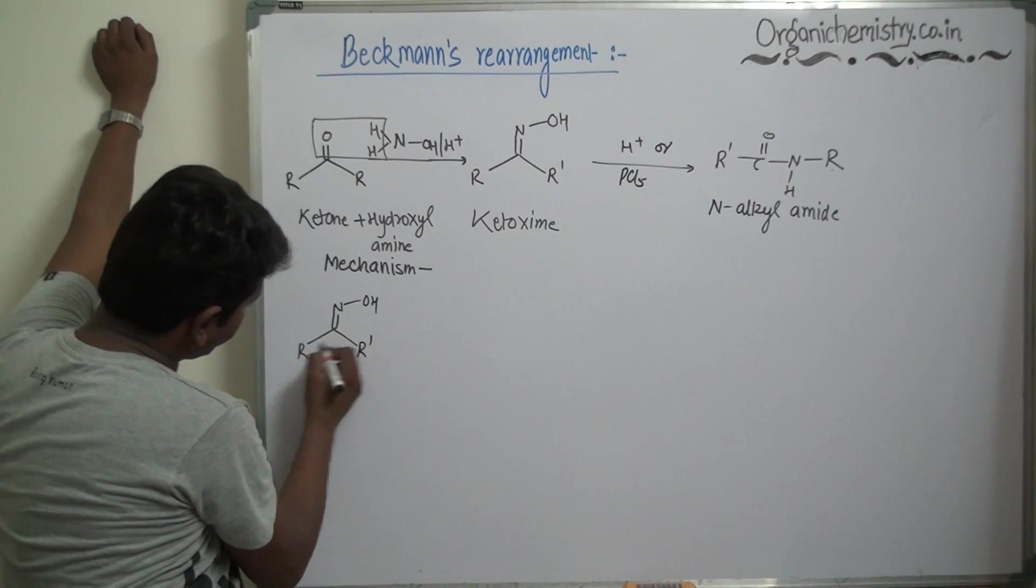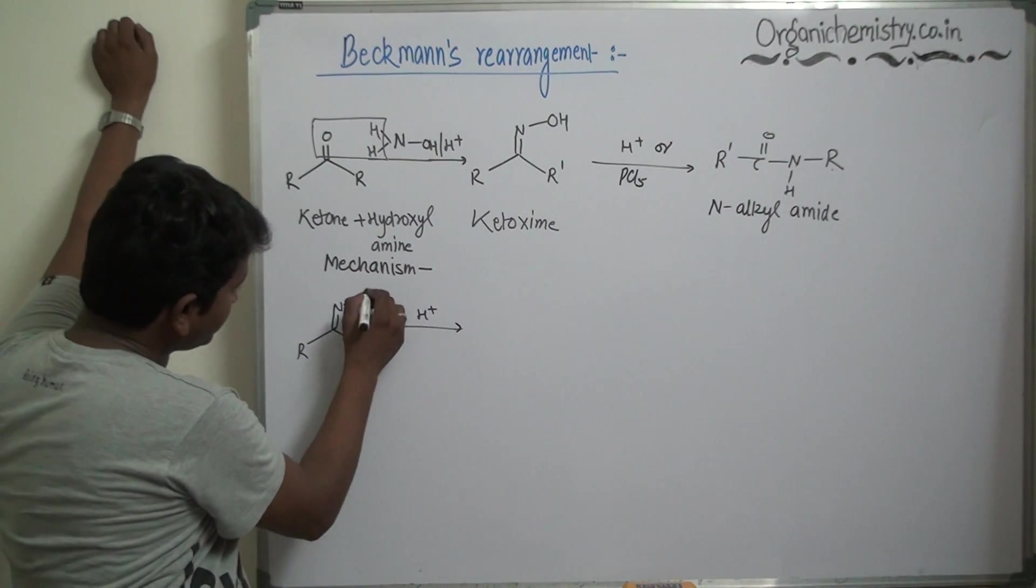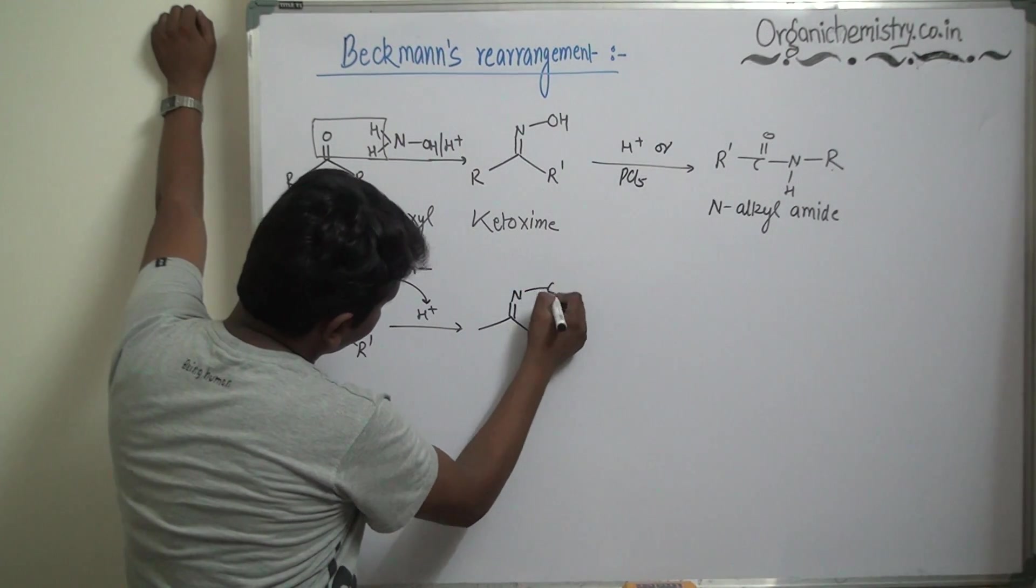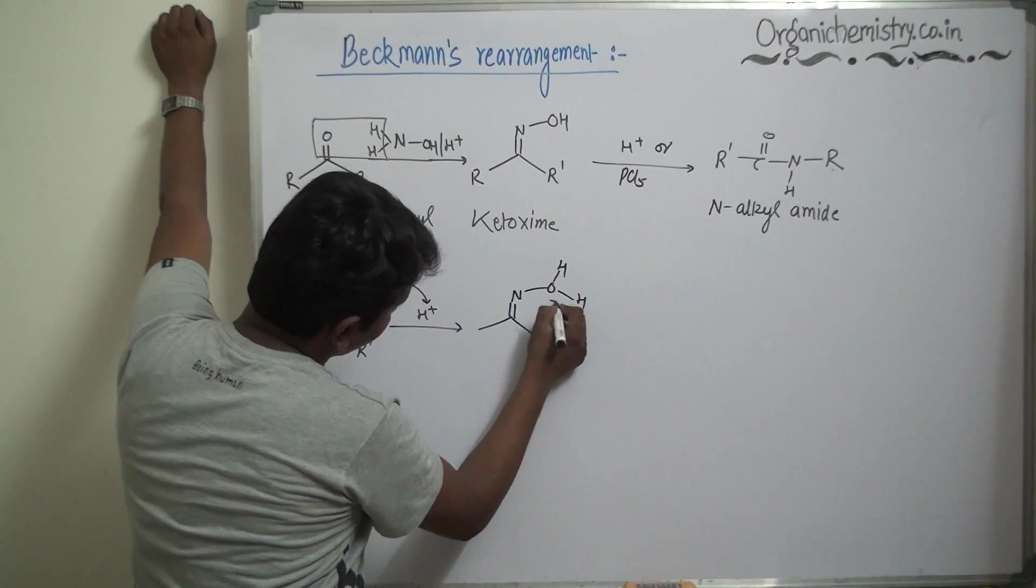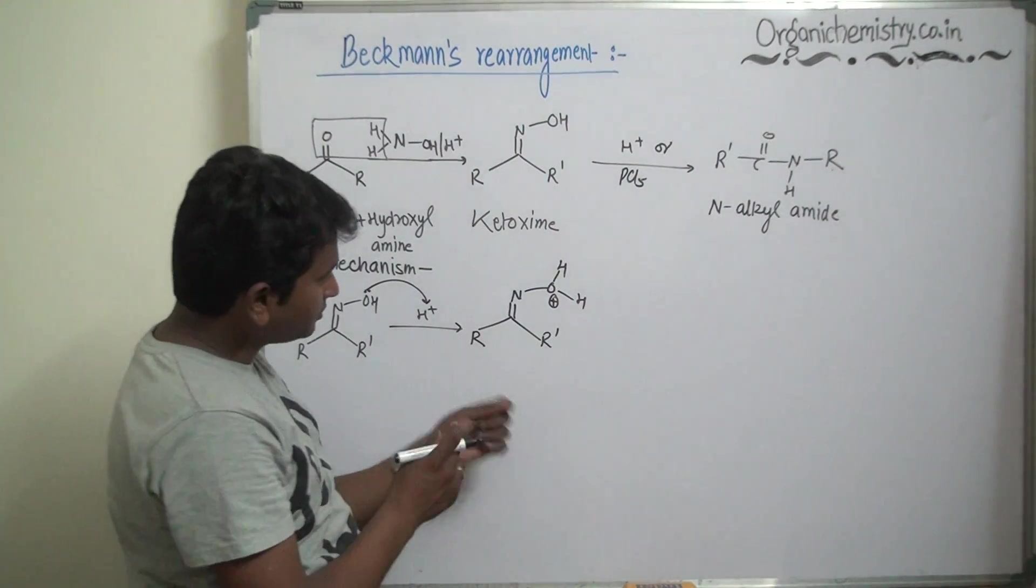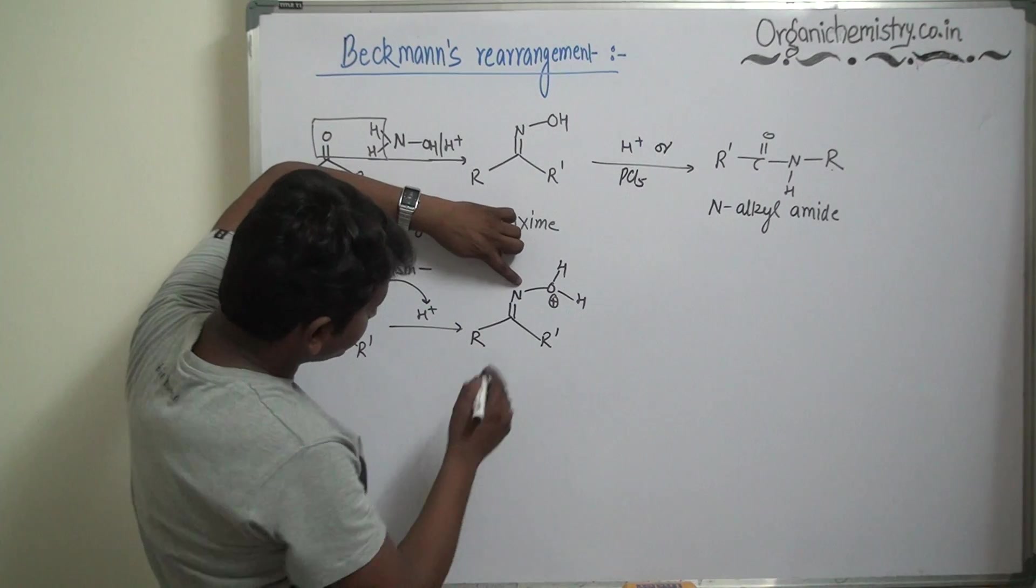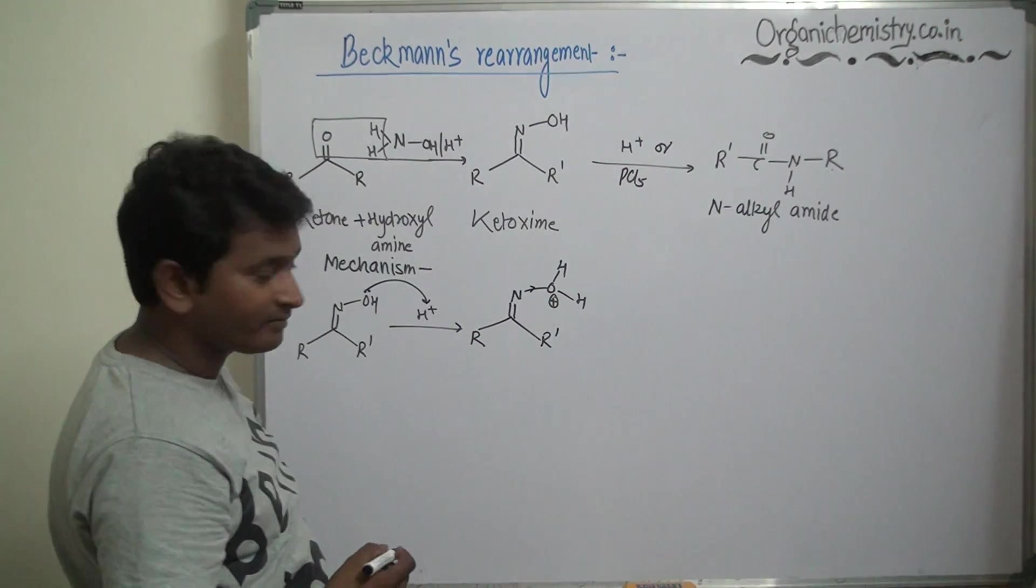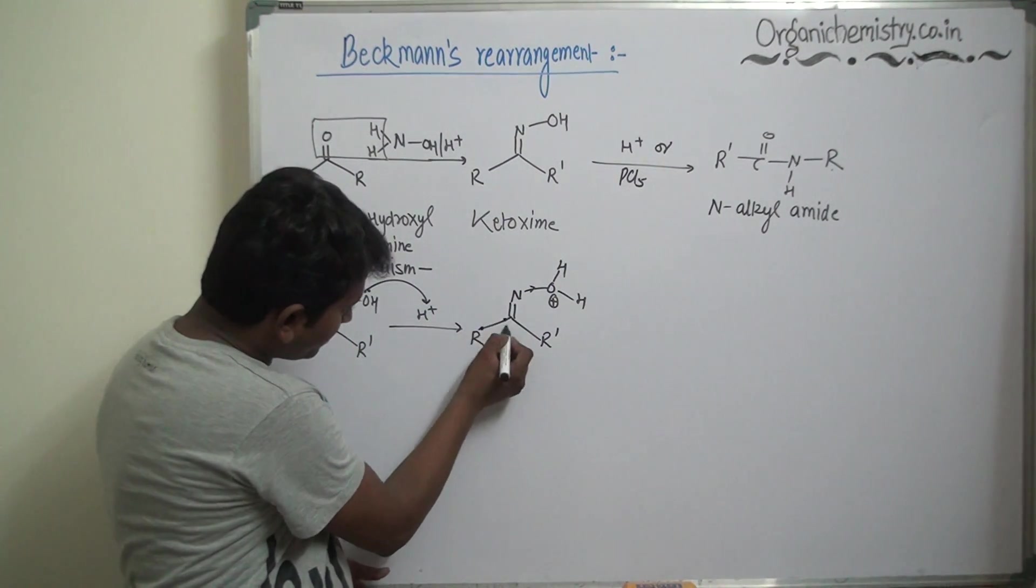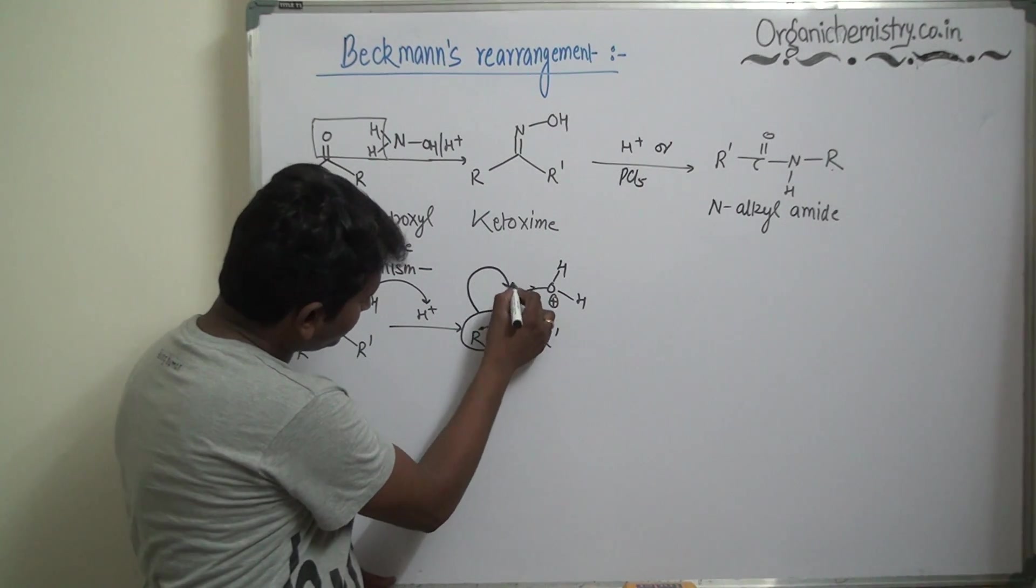Mechanism: This ketoxime on treatment with acid, first acid-base reaction take place. This type of compound is formed. Due to positive charge over this oxygen, electron density of this nitrogen shifted towards this oxygen, and so this sigma bond breaks and this R migrates from this carbon to nitrogen.